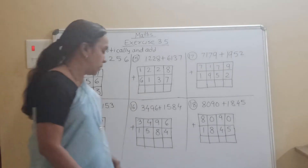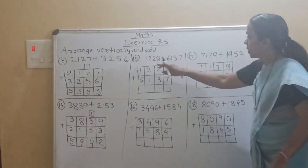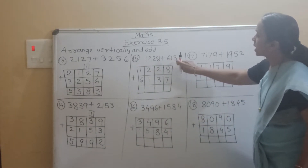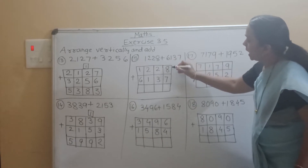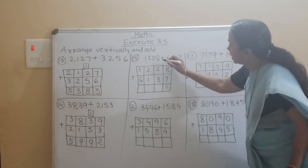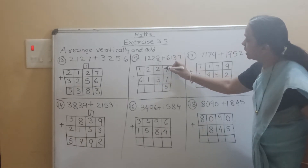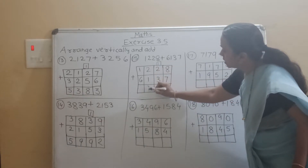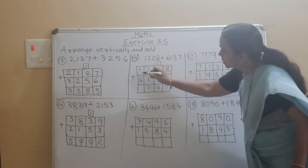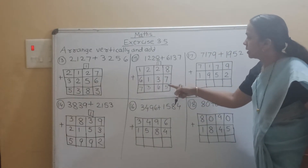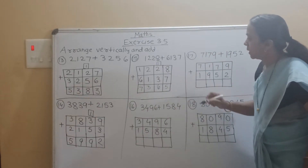Now see the 15th question: 1228 plus 6137. So 8 plus 7 is 15, carry 1. Then 2 plus 1 is 3, 3 plus 3 is 6, 2 plus 1 is 3. Then 6 plus 1 is 7. So our answer is 7365.